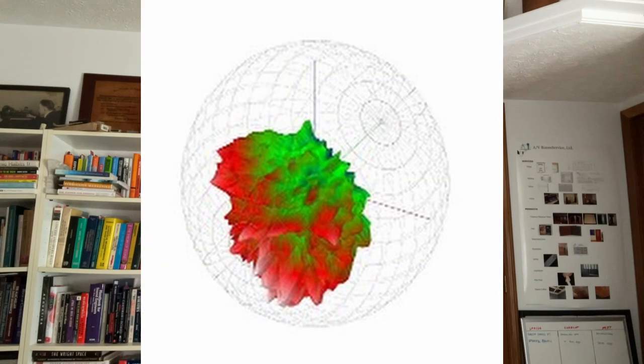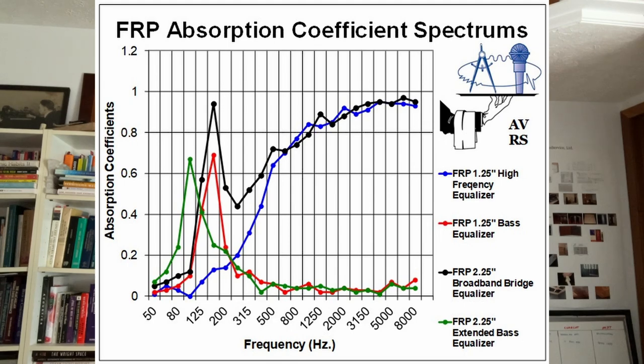Different acoustic treatments are for different applications. You might be addressing room modes, first-order reflections, or reverberation times. Depending on those reverberation times, you might address first-order reflections with diffusion or absorption. We need to know the right type of treatment, in the right locations, and in the right quantities — there are different acoustic panels for different applications and different locations depending on what you're trying to address.